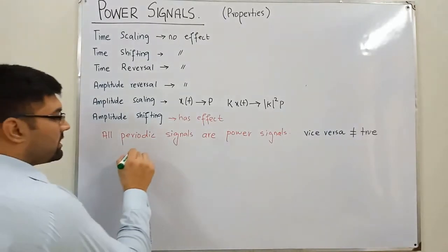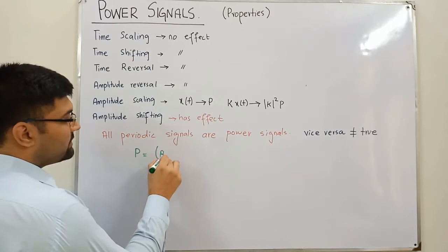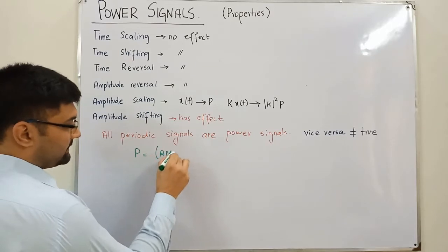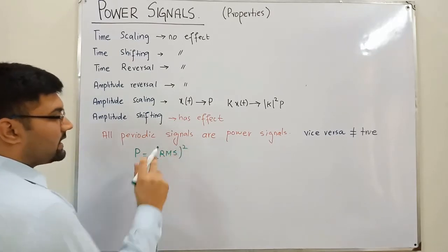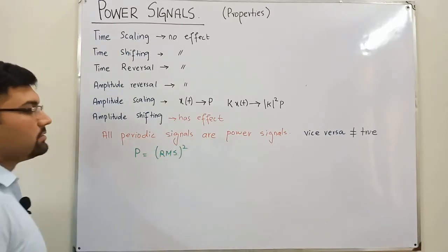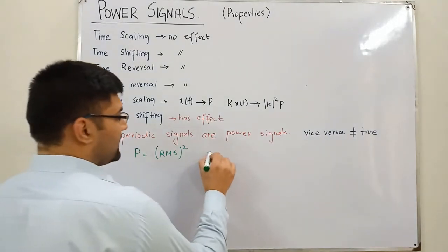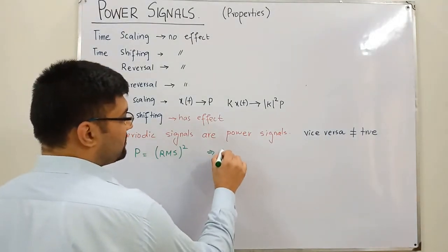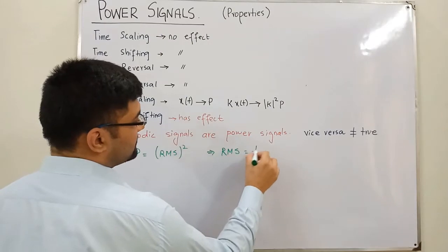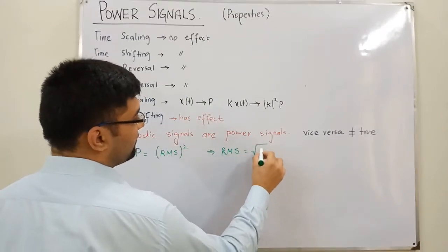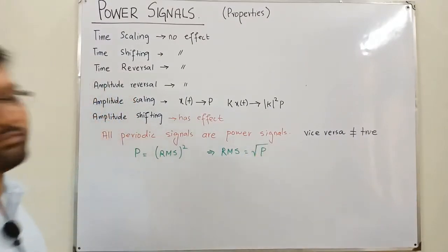Another thing is that the power of a signal is equal to the RMS value squared. The RMS is the root mean square value, and similarly you can say that the RMS value of a function is the square root of the power of that function.